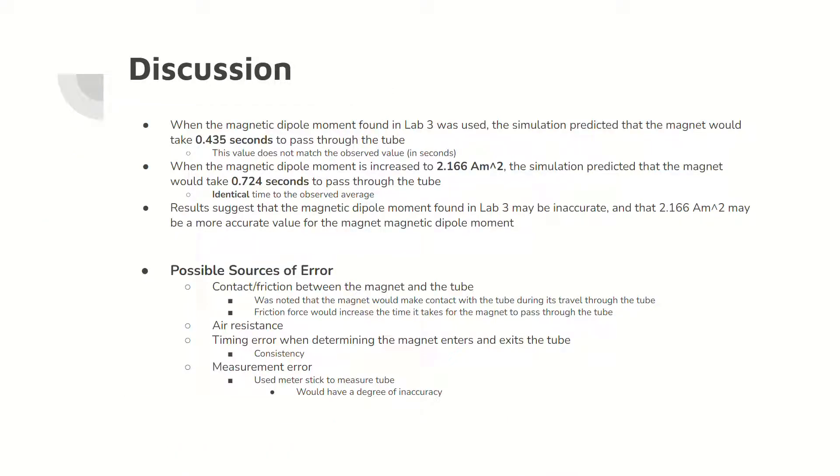Using the magnetic dipole moment from lab 3, the predicted time for the magnet to drop through the tube was 0.435 seconds. This time is much lower than the observed time, which means that the magnet is dropping slower than predicted according to the simulation. However, when the magnetic dipole moment is increased to 2.166 amperes meters squared, the predicted time is identical to the observed time.